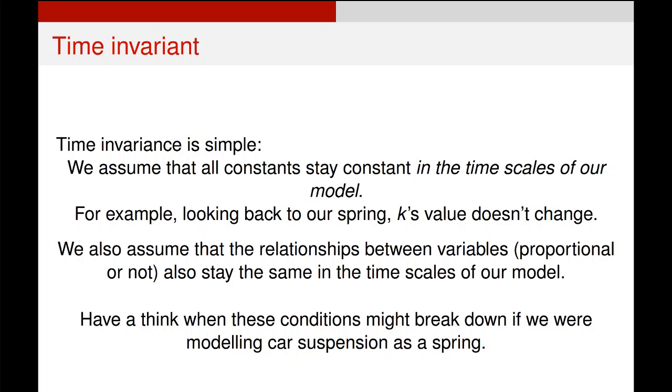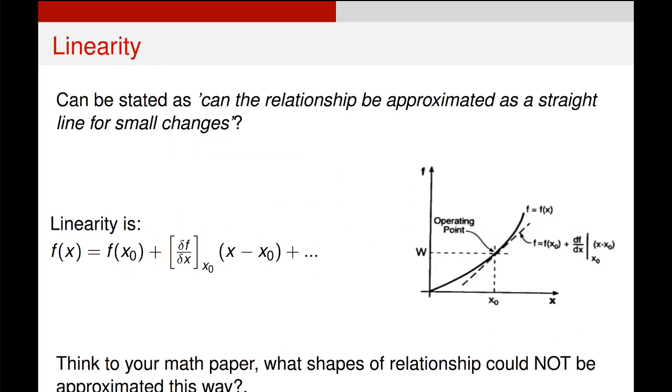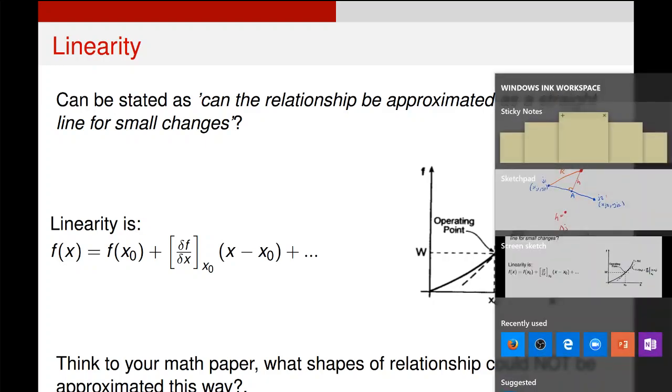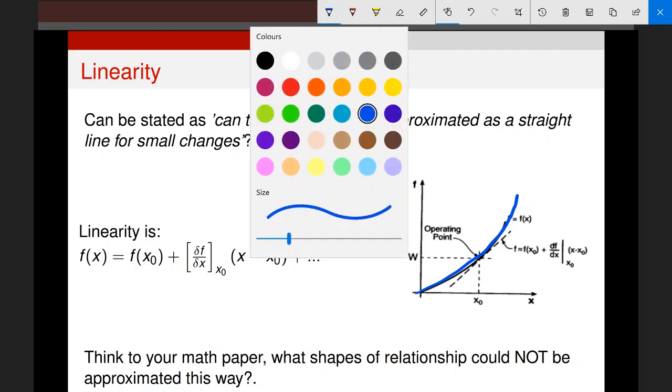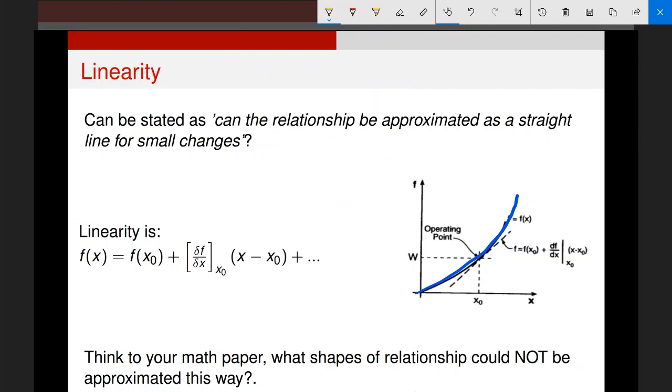And that is a simple but very important assumption. The second thing is linearity, and linearity is very simple. We can state it in English as: can this relationship be approximated as a straight line for small changes? So take a look at that graph on the right-hand side over there. Here's a rough example of linearity for you. Look at this line in the background that I'm going over in blue. That is clearly not a straight line, it's actually a parabola. But if I zoom right in on it at any point along that line I can say I can approximate the slope of that line as a straight line.